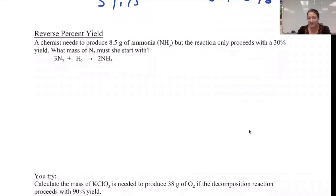This is a reverse percent yield problem where we're given the percent yield, and after we know the percent yield, we're going to figure out the grams of product theoretical, and then we're going to use that to calculate the grams of the reactant.